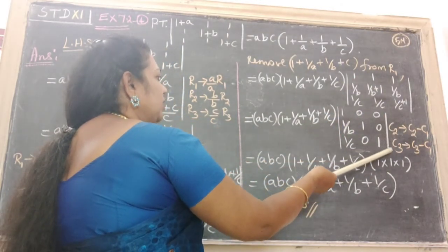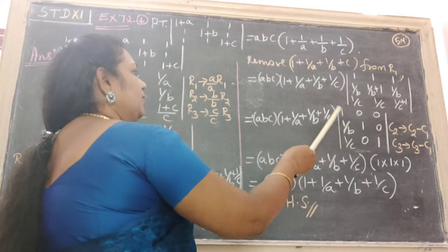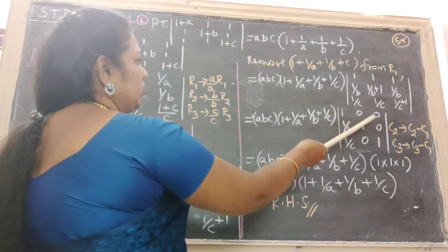Similarly, C3 becomes C3 minus C1. Therefore we get 0, 0, 1.